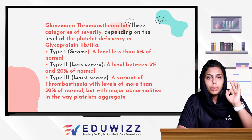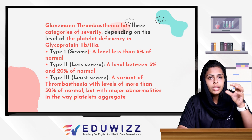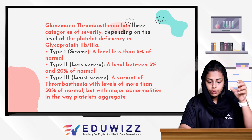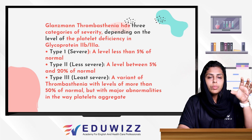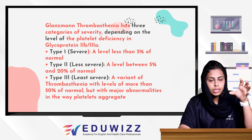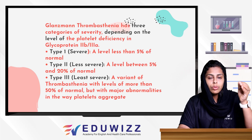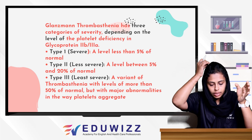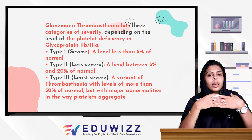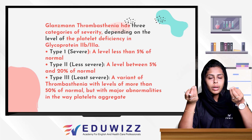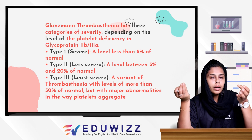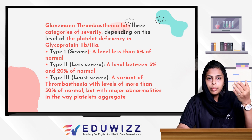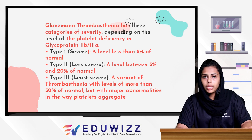There are three types of glycoprotein 2B3A classification. Type 1 is the most severe: less than 5% of normal glycoprotein 2B3A is present on platelets. Type 2 has 5% to 20% of glycoprotein 2B3A present. Type 3 is the least severe, with approximately 50% normal levels. In all types, there are problems with platelet aggregation.